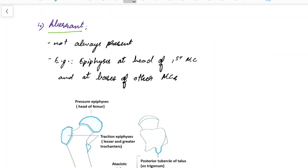Now let us see about Aberrant Epiphysis. Aberrant Epiphyses are not always present. For example, Epiphysis at the end of first metacarpal and at bases of other metacarpals.